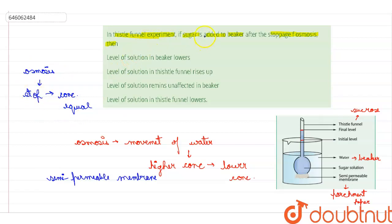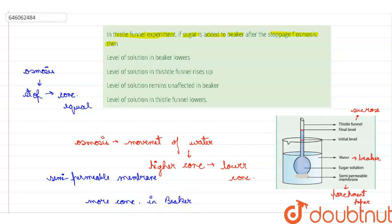But here, if more sugar is added to the beaker, then the concentration of solute molecules in the beaker will become more than the concentration inside the thistle funnel. There will be more concentration in the beaker compared to the thistle funnel, so water will move from the thistle funnel to the outside. This phenomenon is known as exosmosis.